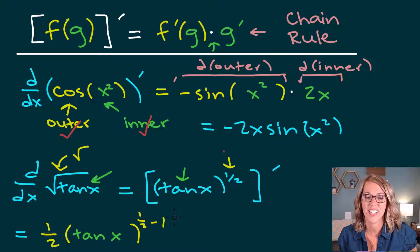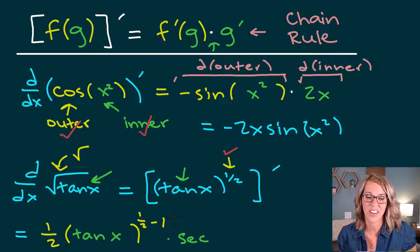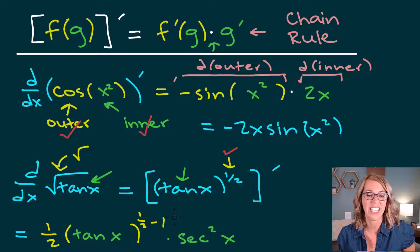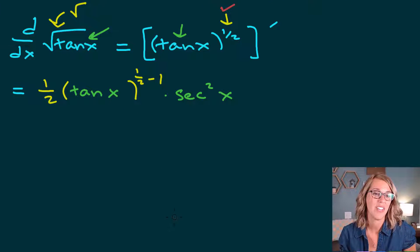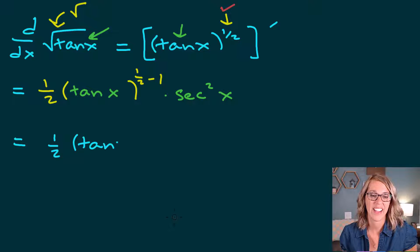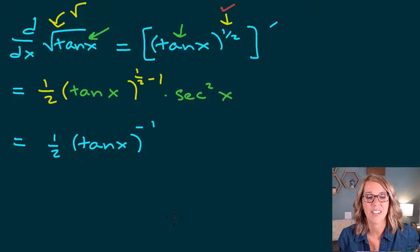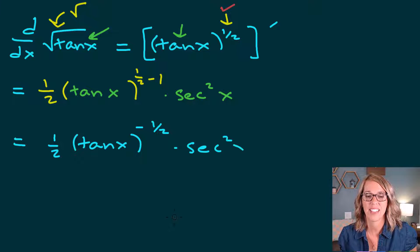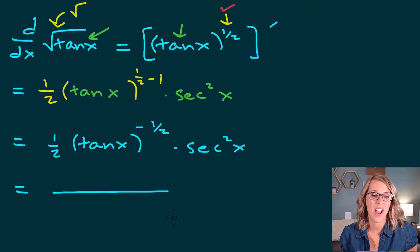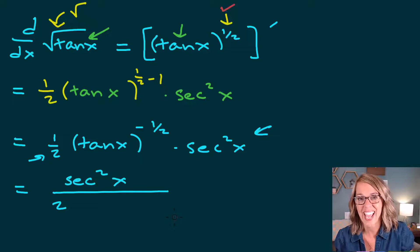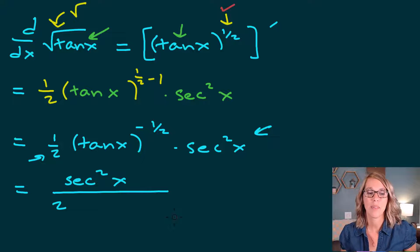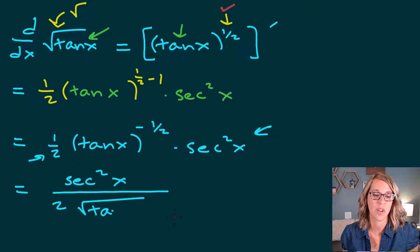The derivative of that outer layer is done. Now let's do the derivative of the inner layer. The derivative of tangent — hopefully you've got this memorized; if not, keep working on it — is secant squared of x. Doing a little cleanup: I've got the one-half power, tangent x, and one-half minus one is negative one-half. I'll change that into a radical. Secant squared x goes in the numerator, two in the denominator, and tan x to the negative one-half power becomes the square root of tangent of x in the denominator.